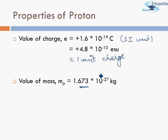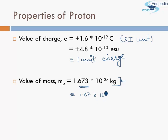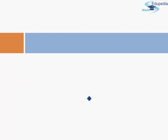That is all we need to know about the proton for now; further details will come in later sessions. One important note: the mass of the proton in grams is approximately 1.67 × 10⁻²⁴ grams. Remember this value, because in the next session on neutrons an important deduction will be made from it. Keep studying and revise these values.